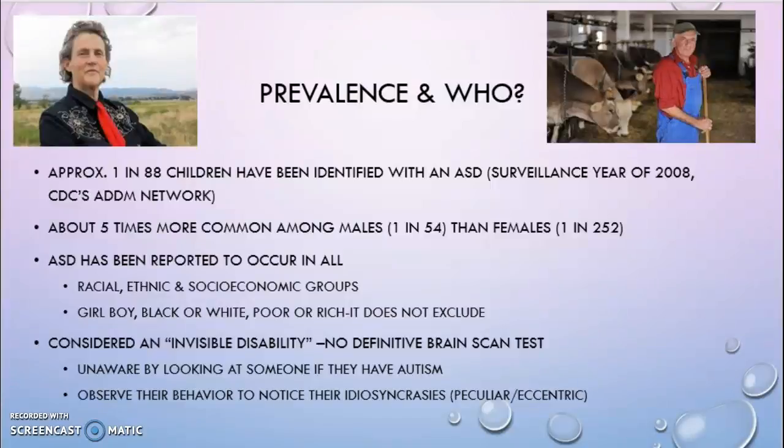Autism is also considered an invisible disability since there's no definitive brain scan test that you can perform on someone to determine that they have autism. There are no tests that show that their brains look different from ours. And with that being said, by looking at someone, you could be completely unaware that they have autism. It's whenever you observe their behavior that you start to notice their idiosyncrasies — their peculiar or eccentric behavior.